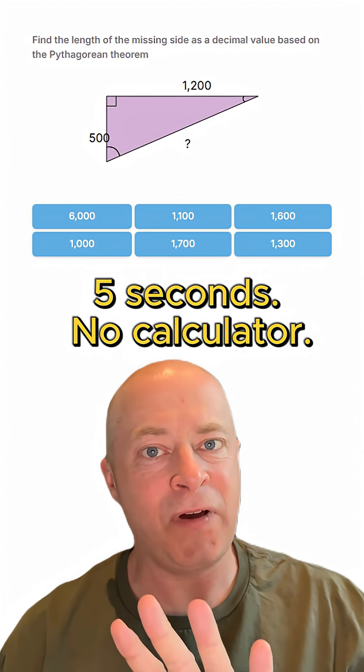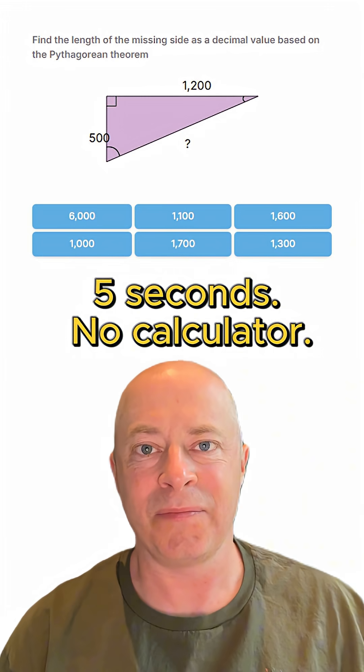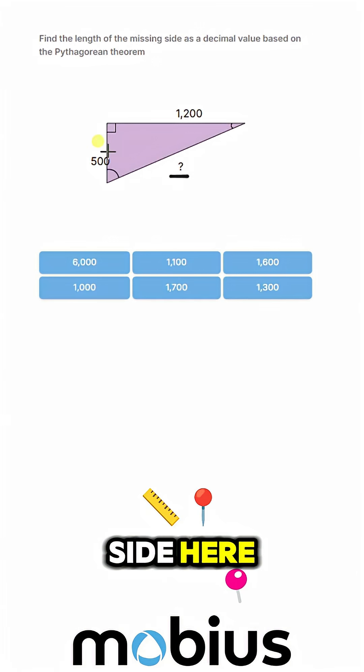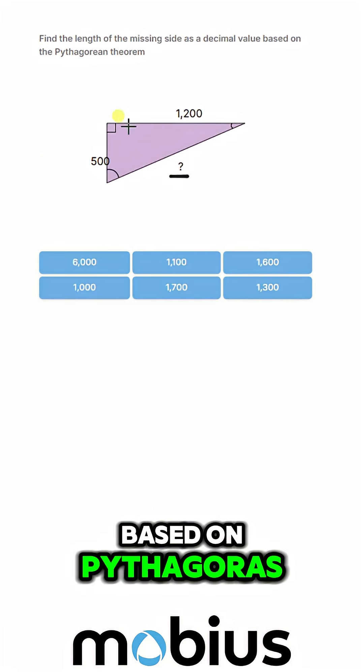You should be able to solve this in five seconds with no calculator. We want to find the length of this missing side based on Pythagoras.